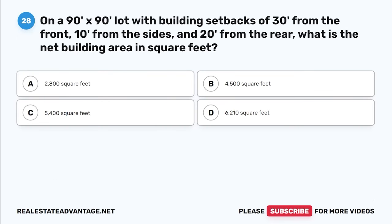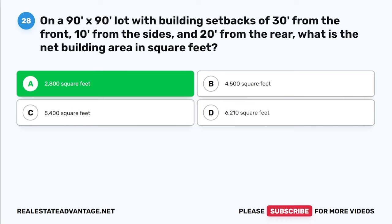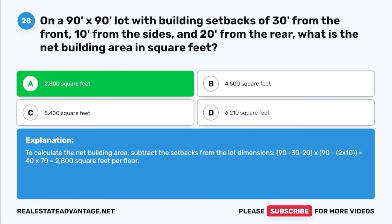Question 28. On a 90-by-90 lot with building setbacks of 30 feet from the front, 10 feet from the sides, and 20 feet from the rear, what is the net building area in square feet? A. 2,800 square feet. B. 4,500 square feet. C. 5,400 square feet. D. 6,210 square feet. The correct answer is A: 2,800 square feet. To calculate the net building area, subtract the setbacks from the lot dimensions: (90 − 30 − 20) × (90 − 2 × 10) = 40 × 70 = 2,800 square feet per floor.